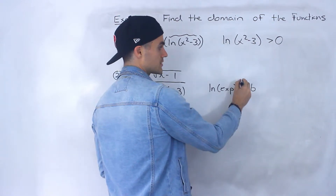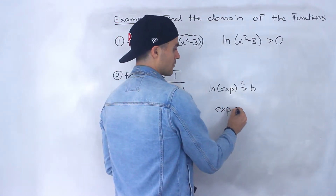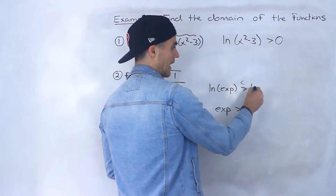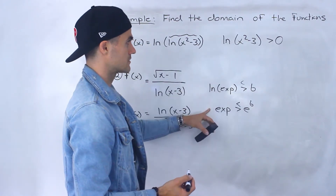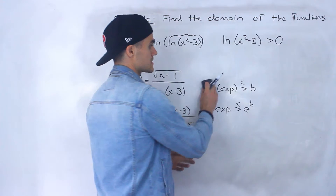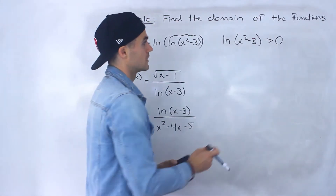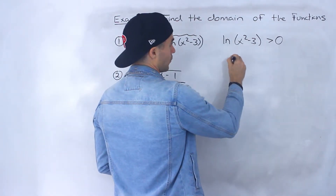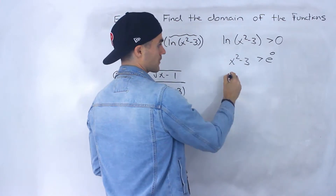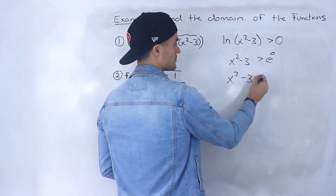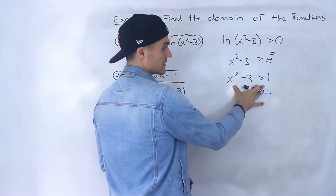This inequality can also be less than. To isolate for this expression, you take the other side as e to the power of that constant. Applying that here, x squared minus three has to be greater than e to the power of zero. So x squared minus three has to be greater than one, because anything to the power of zero is just one. Now we need to solve this inequality.